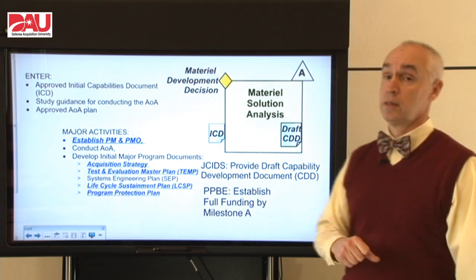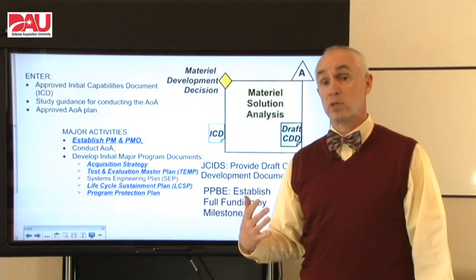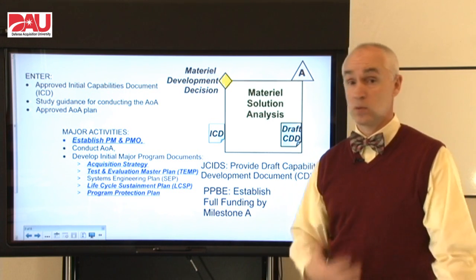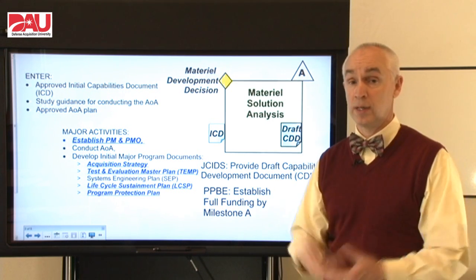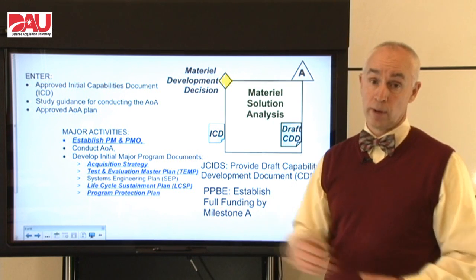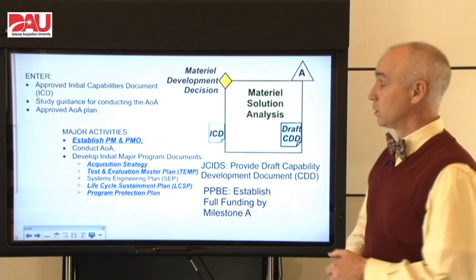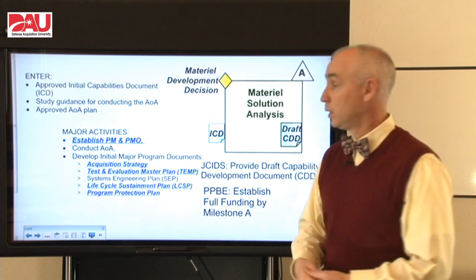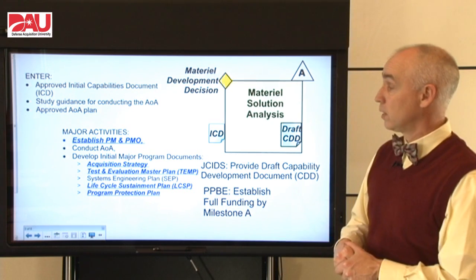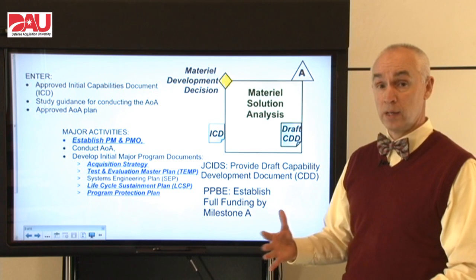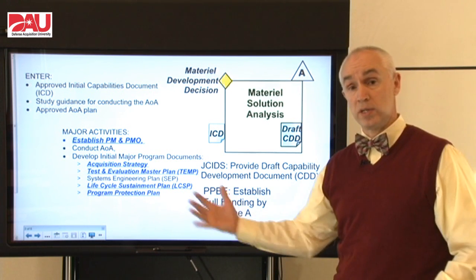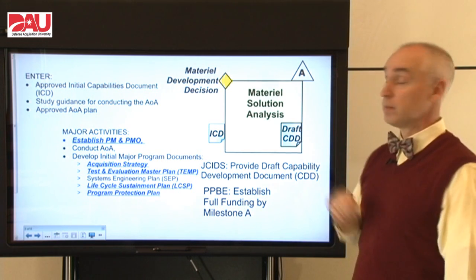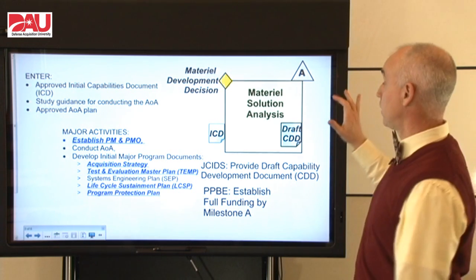We also need money. We have to establish full funding by Milestone A, and that is a fairly long process because only once a year do you have an opportunity to get into the budget and program for the out-years. Once we have picked a technology, got that approved AOA, an acquisition strategy, and the other program documentation necessary, then we are ready for a Milestone A decision to get us to the next phase.